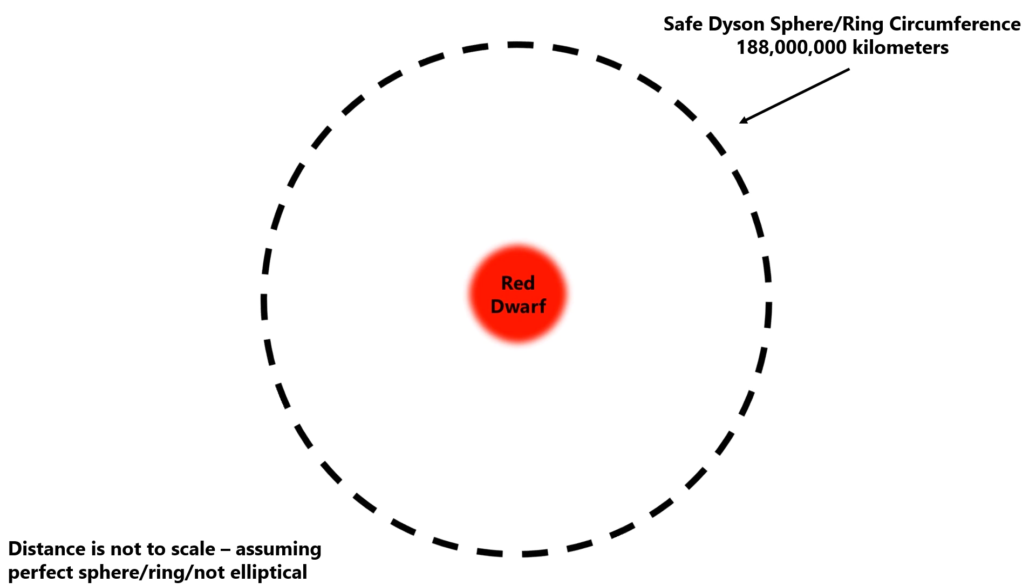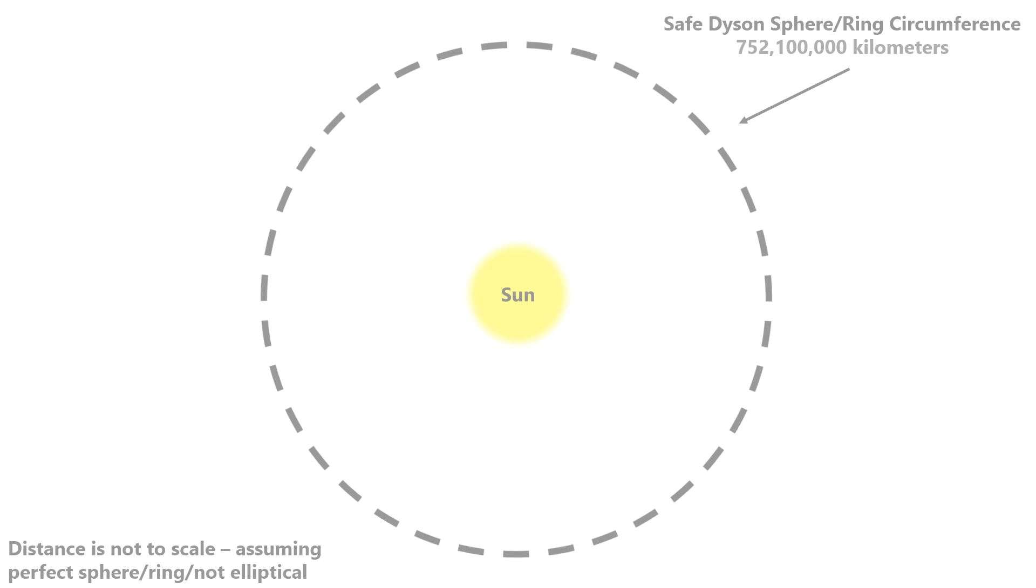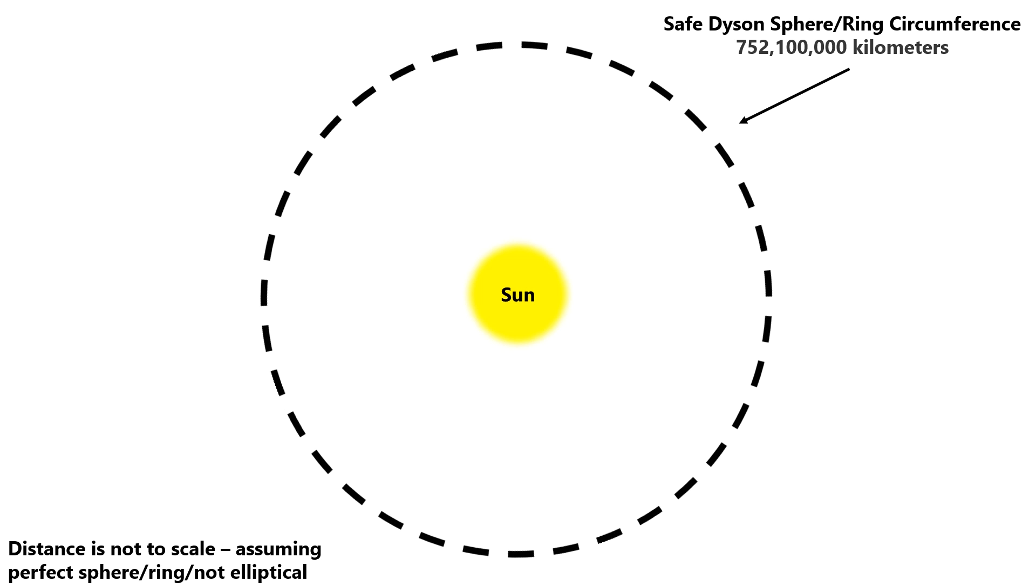If we ever decide to build some sort of a Dyson structure, let's say a Dyson ring, chances are we would have developed technologically to the point where we have expanded to other star systems. And if we reach that point, we will want to build the Dyson ring around red dwarfs or white dwarfs. Not only because these stars can support Dyson rings that are much closer to them than that of the sun, but also because these stars live much longer than the sun. Trillions of years rather than billions of years.